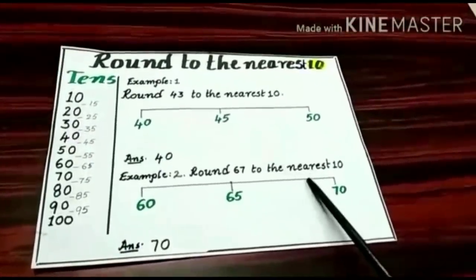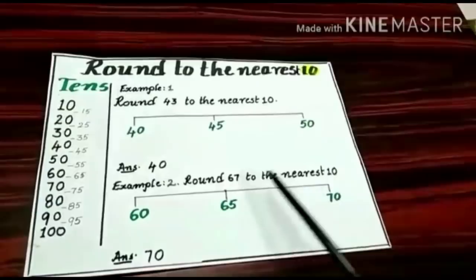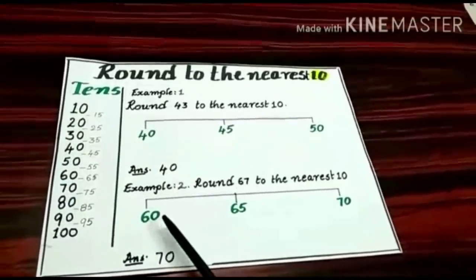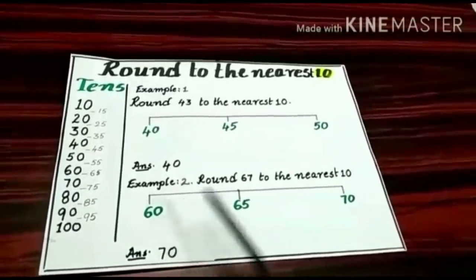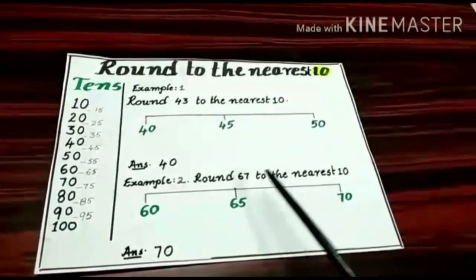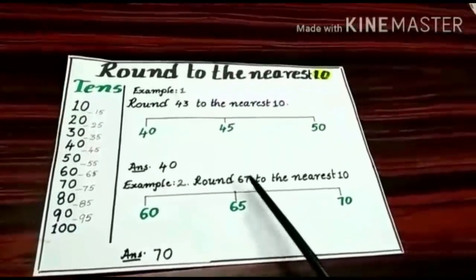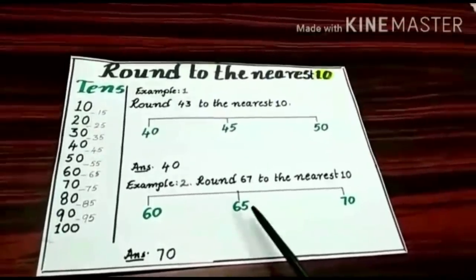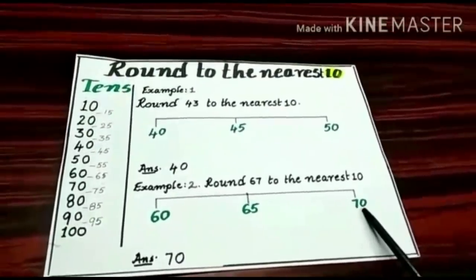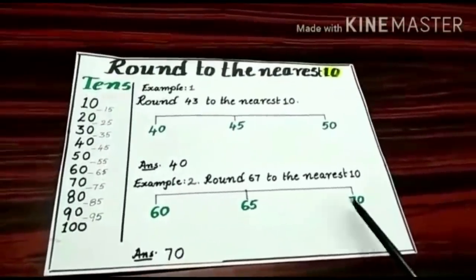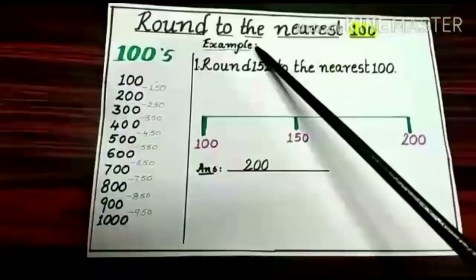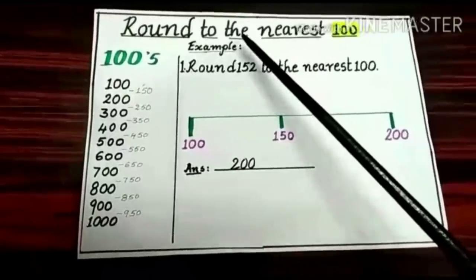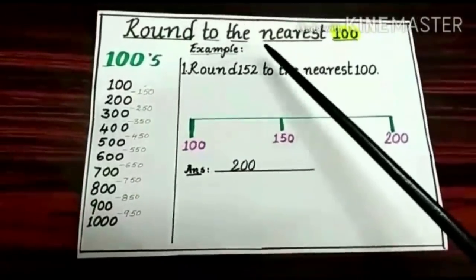Now the next example — round 67 to the nearest 10. 67 lies between two 10s: 60 and 70. 67 is more than the middle number, so round up to the next 10 — that is 70.